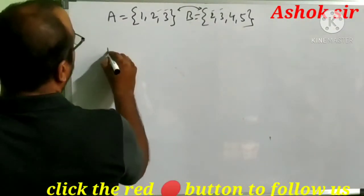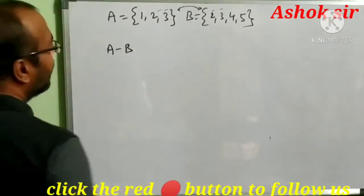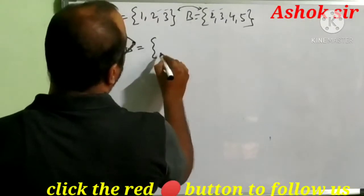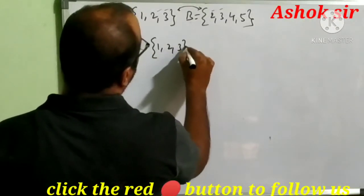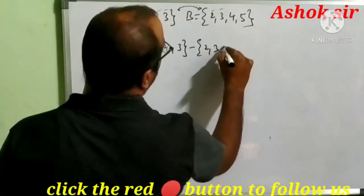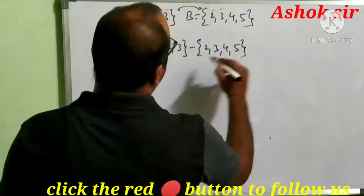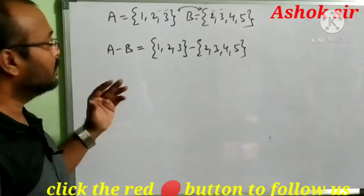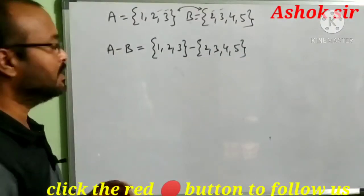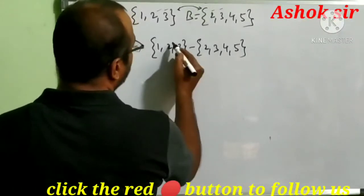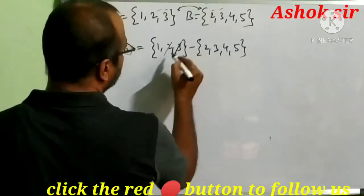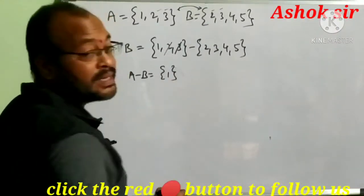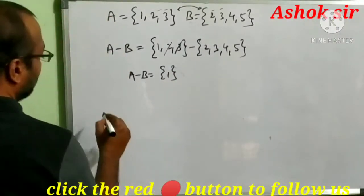Now A minus B. A minus B means: write A = {1, 2, 3} minus B = {2, 3, 4, 5}. A minus B means the A-only part — elements common to both are cancelled. Here 2 is common, cancel it; 3 is common, cancel it. The answer becomes only 1. Now let's see how to represent this in a Venn diagram.